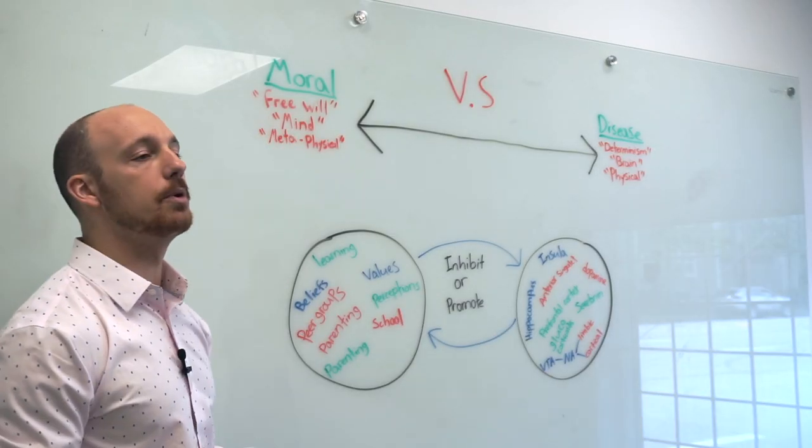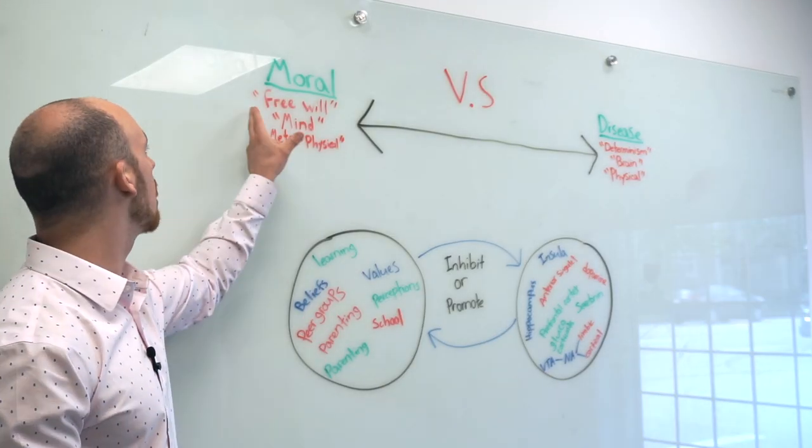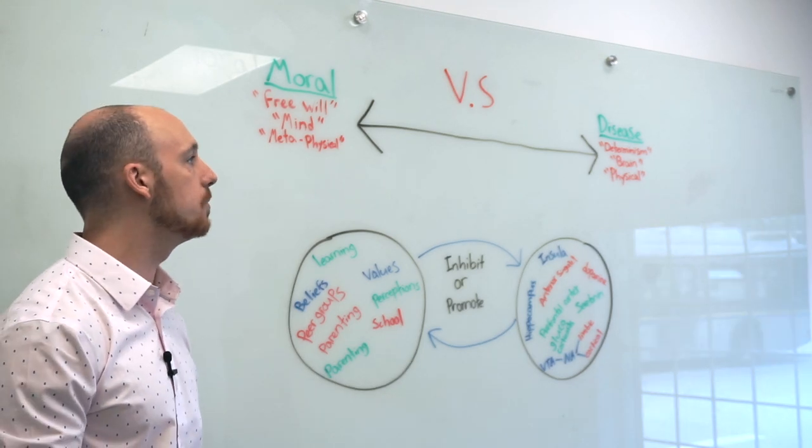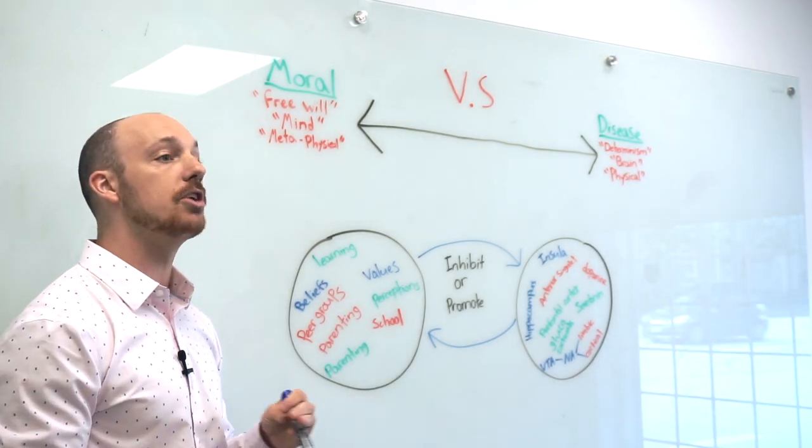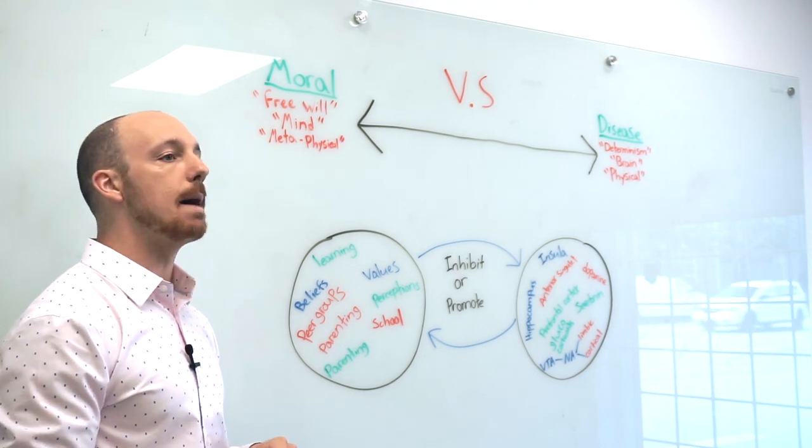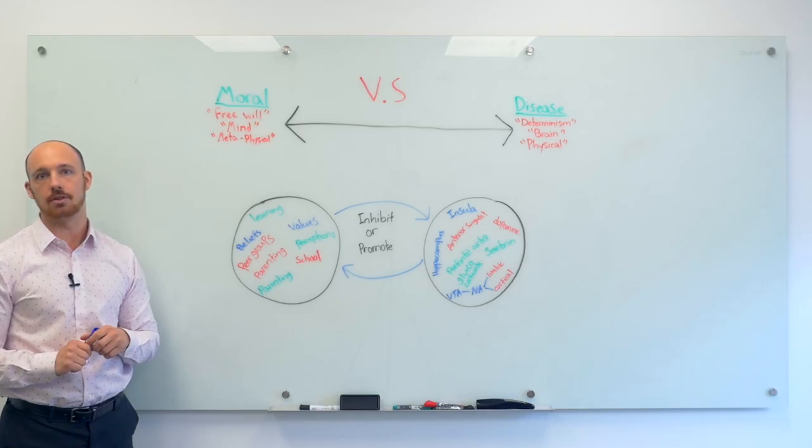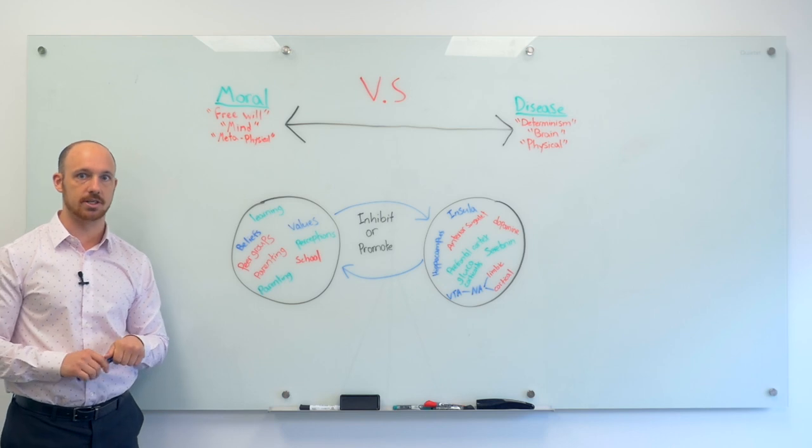Now I know you guys might be thinking that's a little bit ridiculous that I would actually have to point out the fact that the moral model is based on free will. But if you guys are in the sciences, especially in biology and the neurosciences, most of them don't believe in free will. They believe in its opposite: determinism.